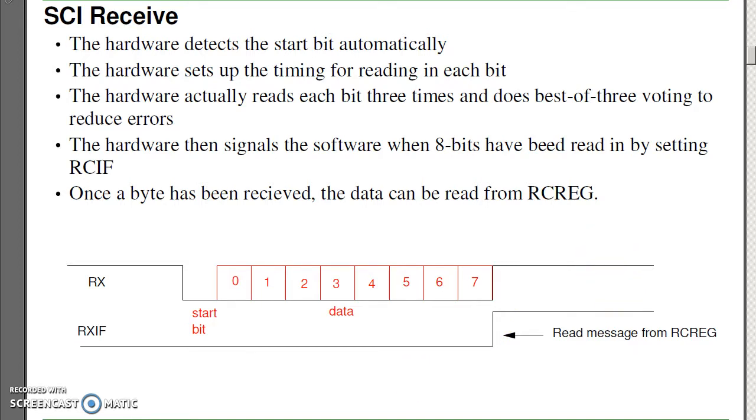Transmission's different than reception. Transmission, we didn't have to use interrupts. For reception I do, because I have no idea when the data's coming in. As soon as the data comes in, I've got to grab the data and do something with it, because the next byte could be coming in at any time.